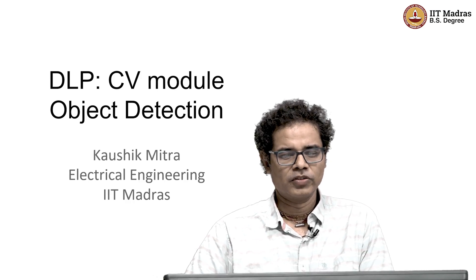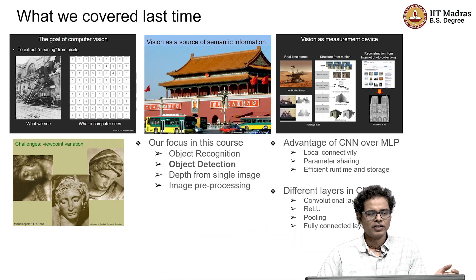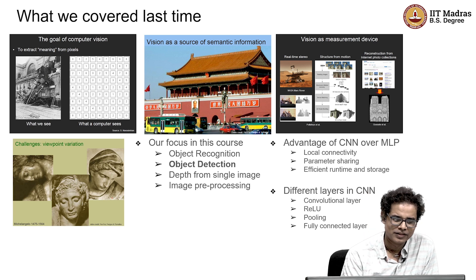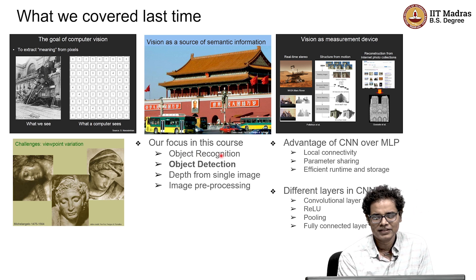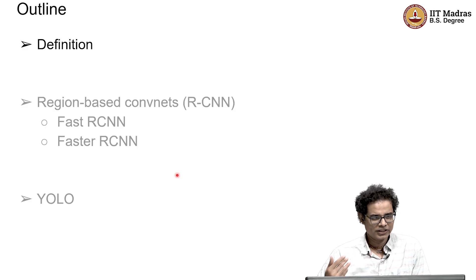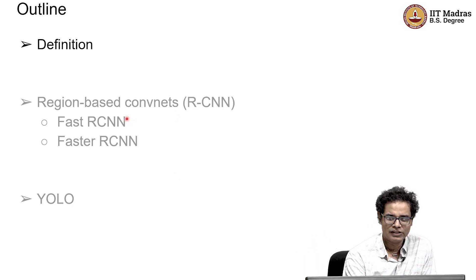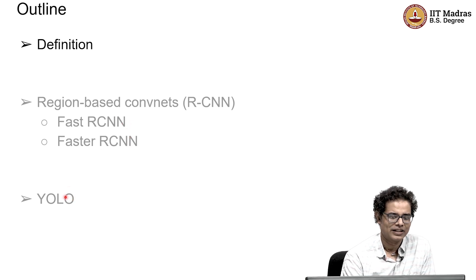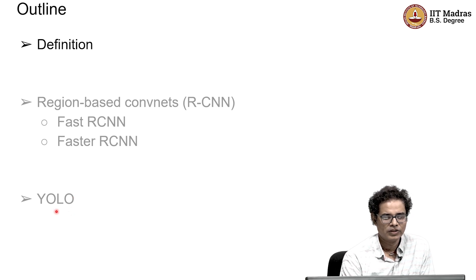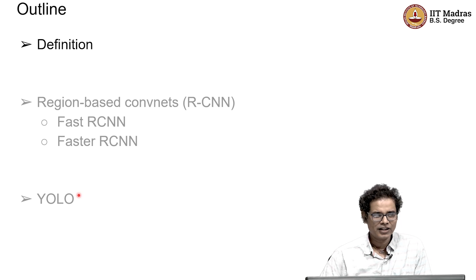Welcome back. Today we'll be covering object detection. We covered object recognition last week, and this week we'll cover object detection. We'll start with the definition, then look at two popular object detectors: Region-Based Convolutional Neural Networks, or RCNN — specifically Fast RCNN and Faster RCNN — and also YOLO, which stands for 'You Only Look Once.'